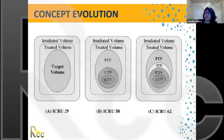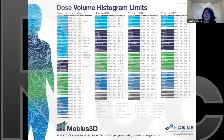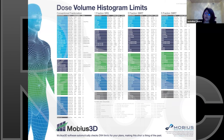A reference table was provided covering conventional fractionation OAR dose constraints and SBRT/SRS constraints for 1, 3, and 5 fractions, with references to the RTOG protocols from which the data are drawn. Participants can contact the presenter to obtain a copy of this slide for future reference.